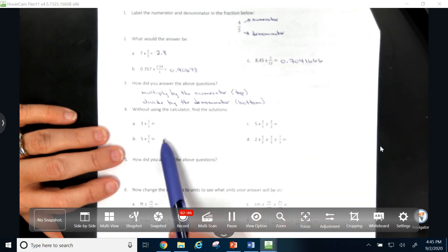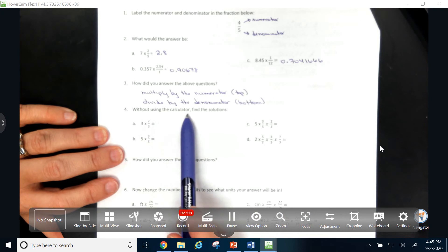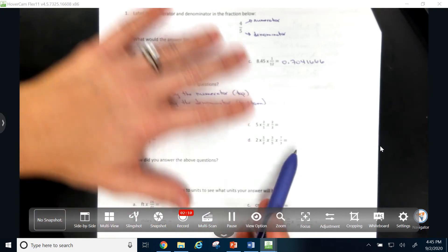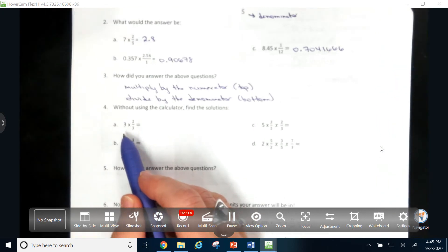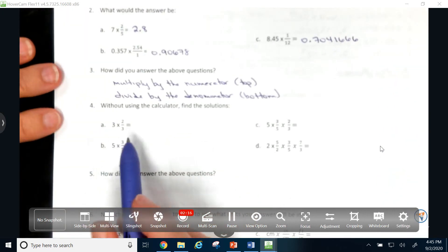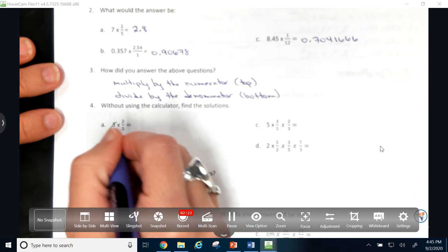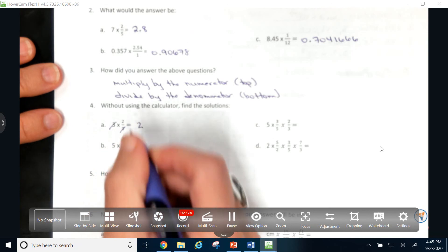So then, looking here at number four, without using the calculator, find the solutions. Well, I can see that if I have 3 times 2 thirds, so 3 times 2 divided by 3, well, I can see that those 3s are going to cancel out, and my answer would be 2.